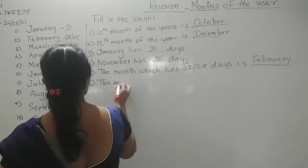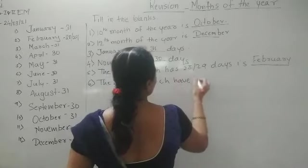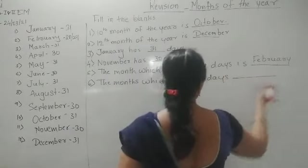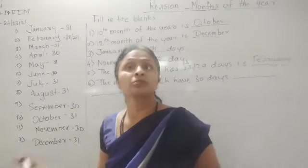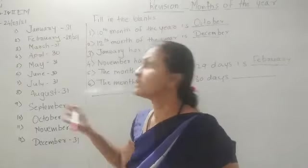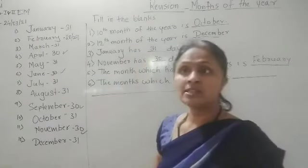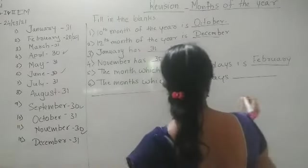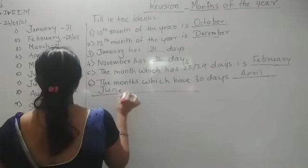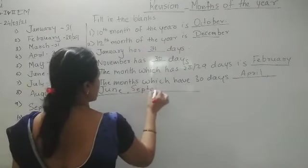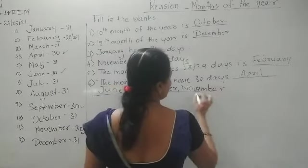Next question: the months which have 30 days. Now you have to make the list of the months having 30 days. You have to check the list to write the answer. There are 4 months having 30 days. The answer is: April, June, September, and November. These 4 months have a number of days equal to 30.